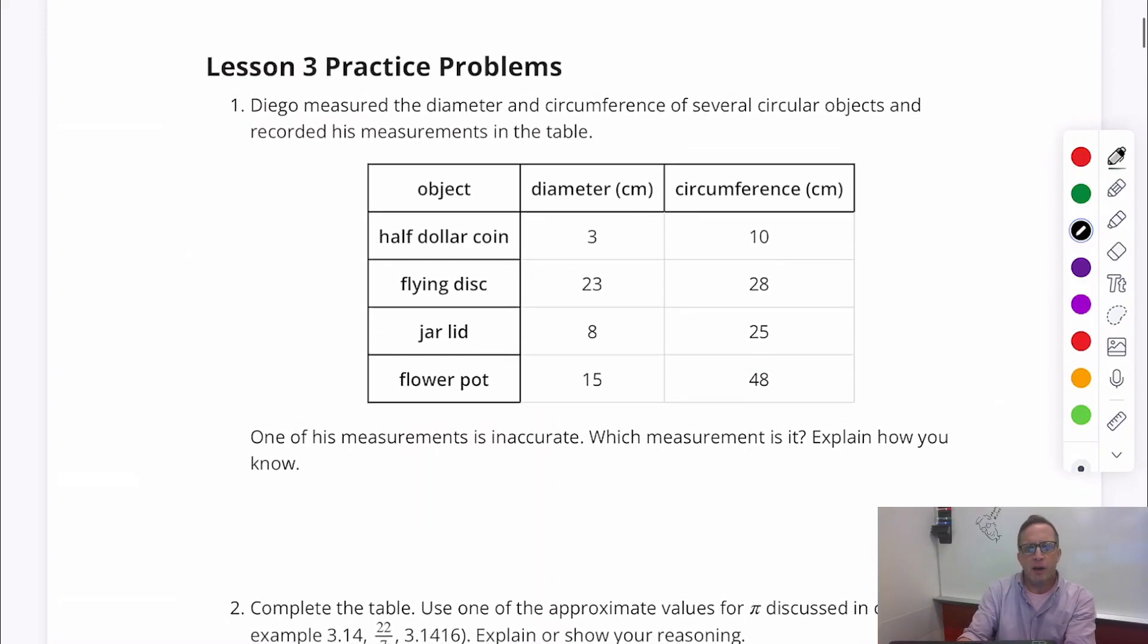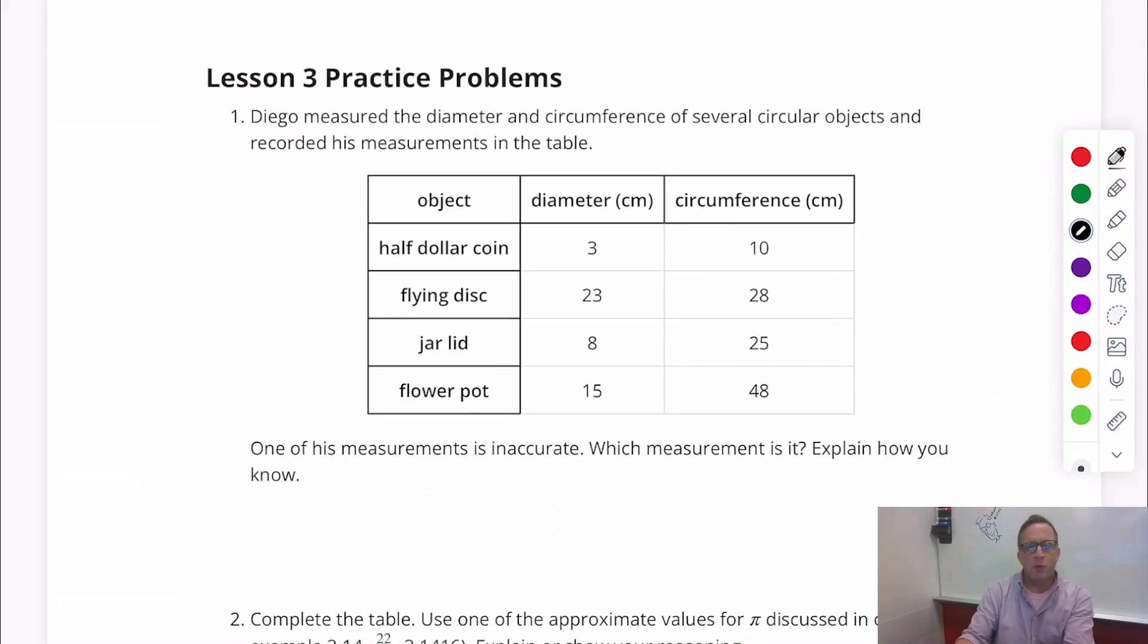Okay, let's go ahead and start up on our Lesson 3 practice problems. For number 1, what we have is that Diego measured the diameter and circumference of several circular objects and recorded his measurements in the table.